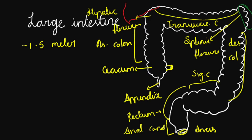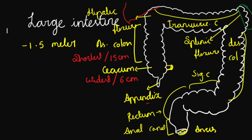From the ileocecal valve, the appendix starts. Then comes the cecum, which is considered the widest part, with a length of 6 cm. Then comes the ascending colon, which is considered the shortest part of the colon, at 15 cm. Then the hepatic flexure, and then the transverse colon, which is the longest and most mobile part — it moves very freely without any attachments.